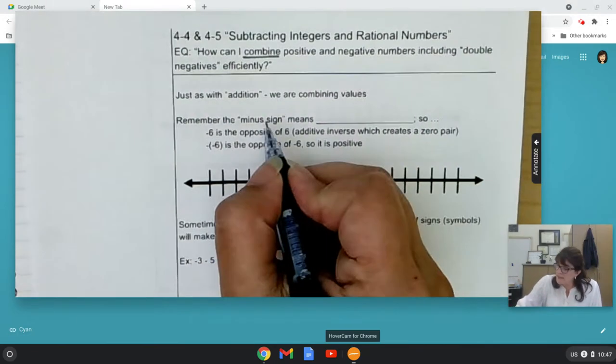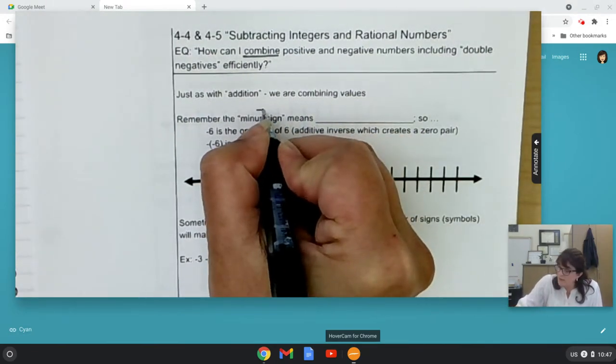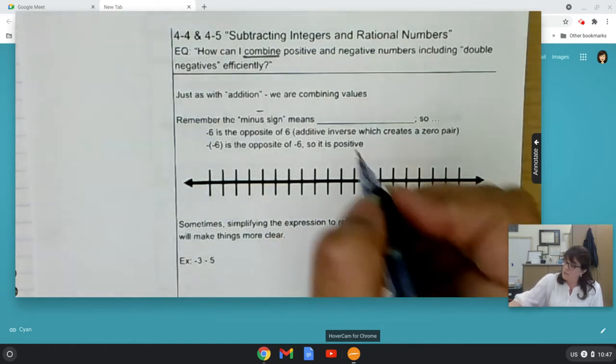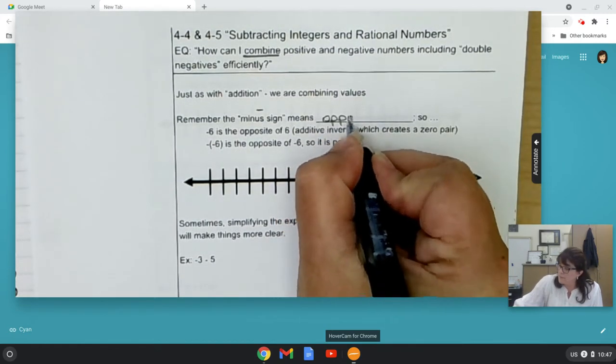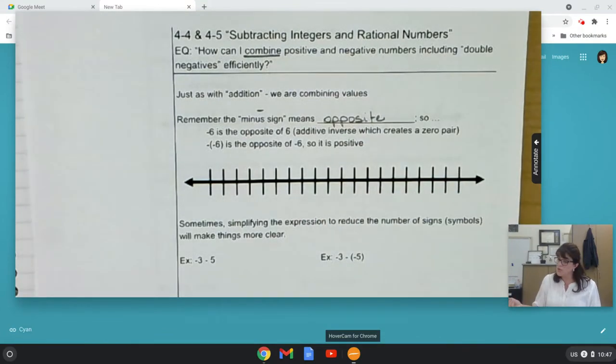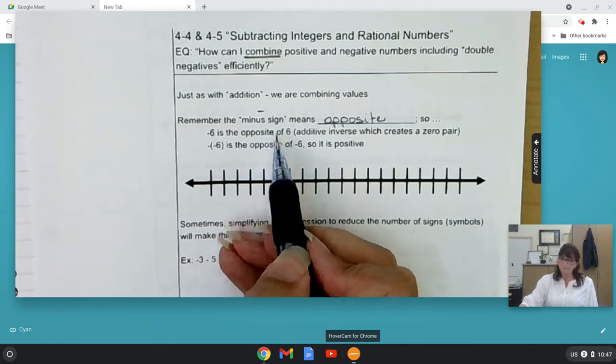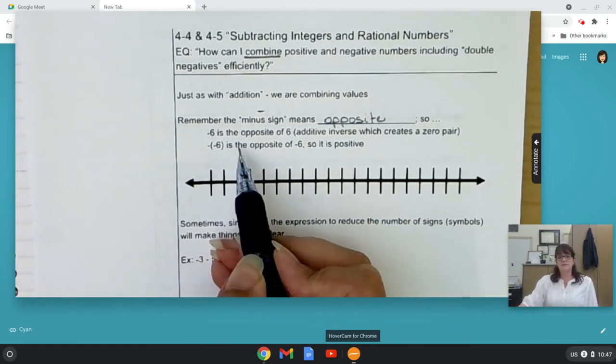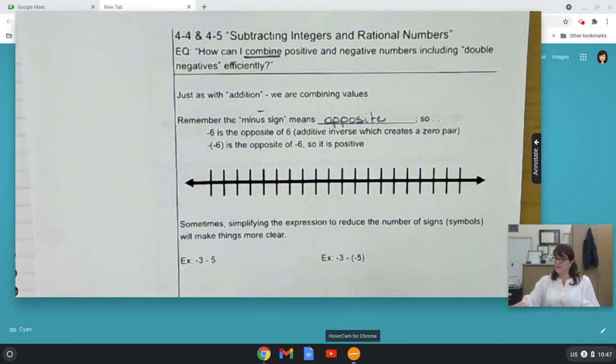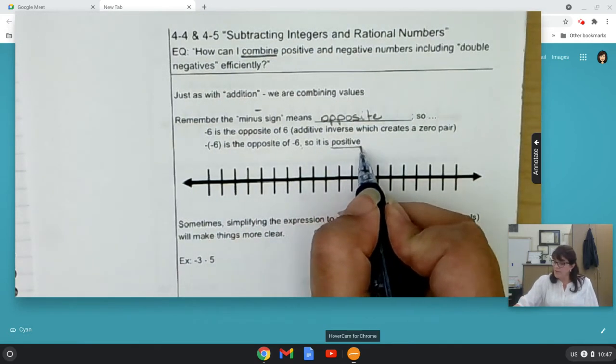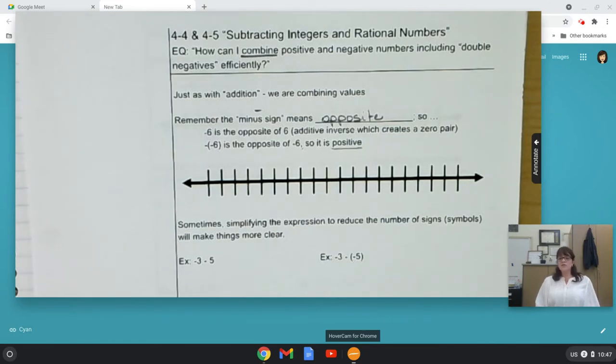Remember, the minus sign, this guy right here, means opposite. So, negative six is the opposite of six. Negative negative six is the opposite of negative six, so it is positive. And we've used logic like this since we were toddlers. This isn't new, but sometimes combining it with numbers makes your head spin a little bit.